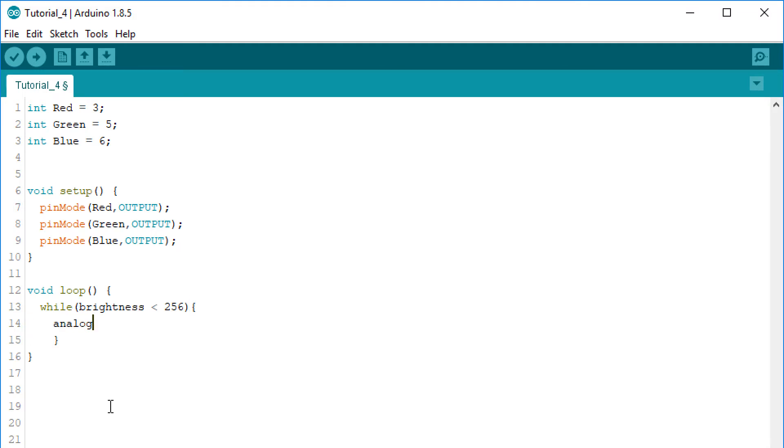In the while loop we do the same thing, call the analogWrite on the red pin first with a brightness variable. We have to initialize that brightness variable at the beginning of the code as an integer starting at 0. Then the same delay and after that we have to increment the brightness variable because if we forget to do that, we remain in this loop forever.